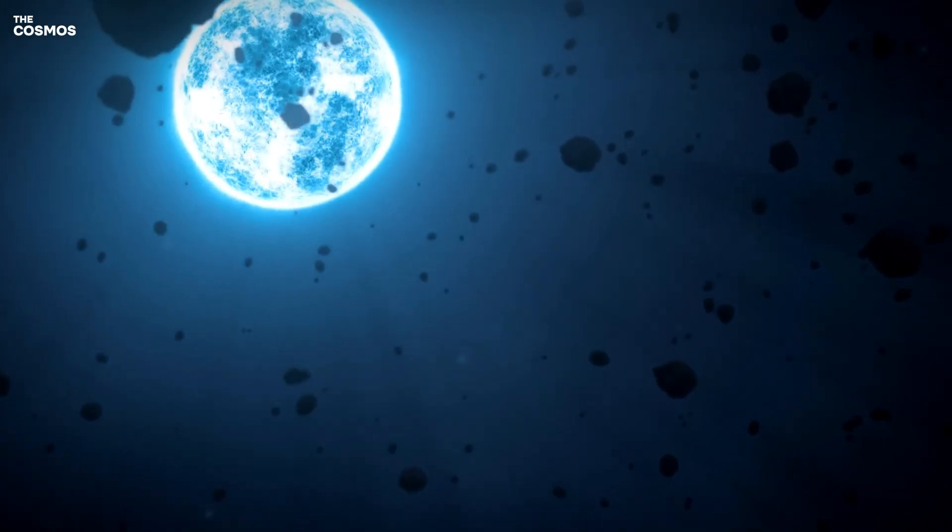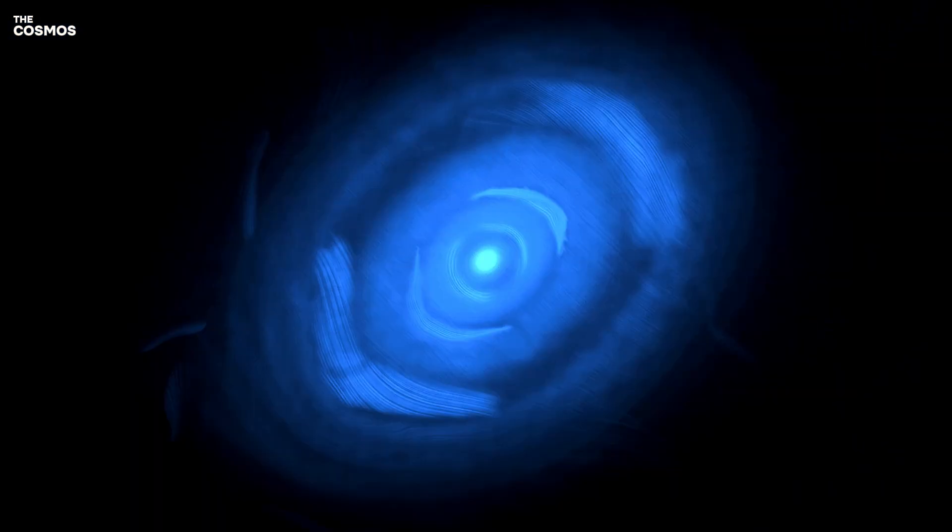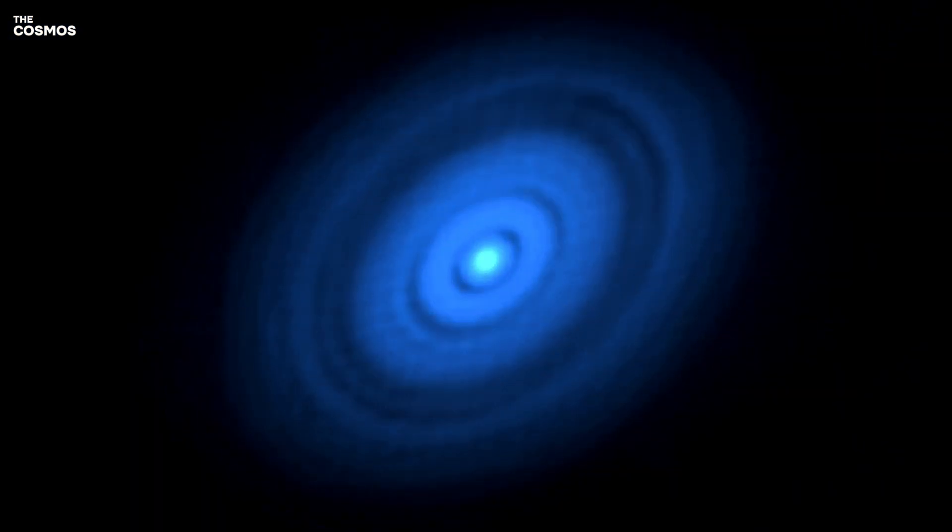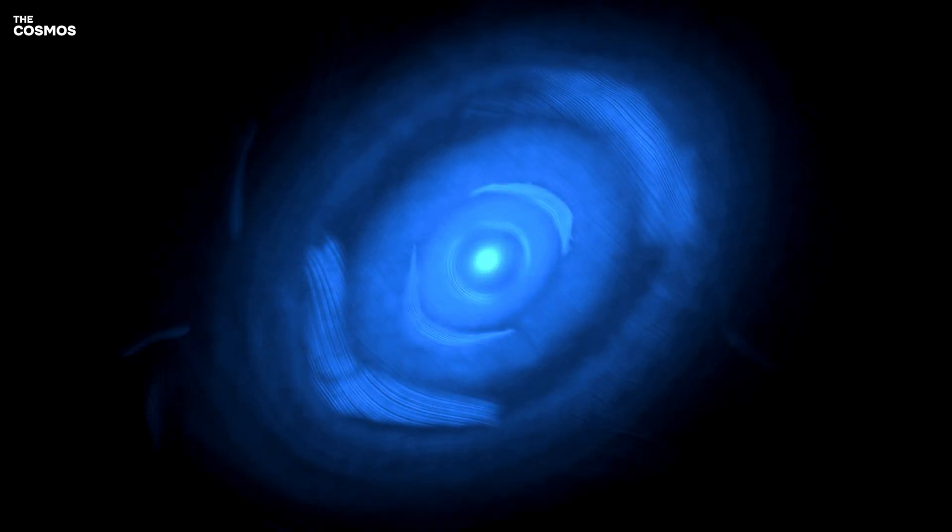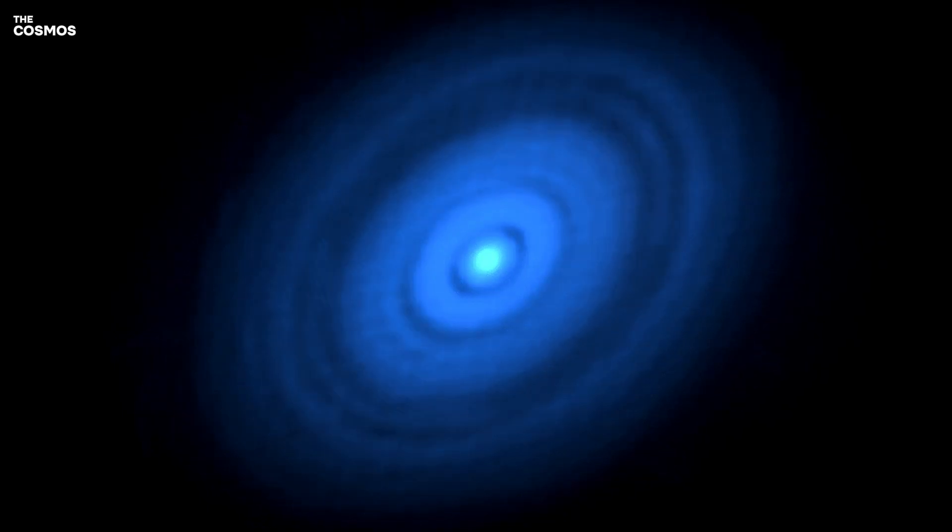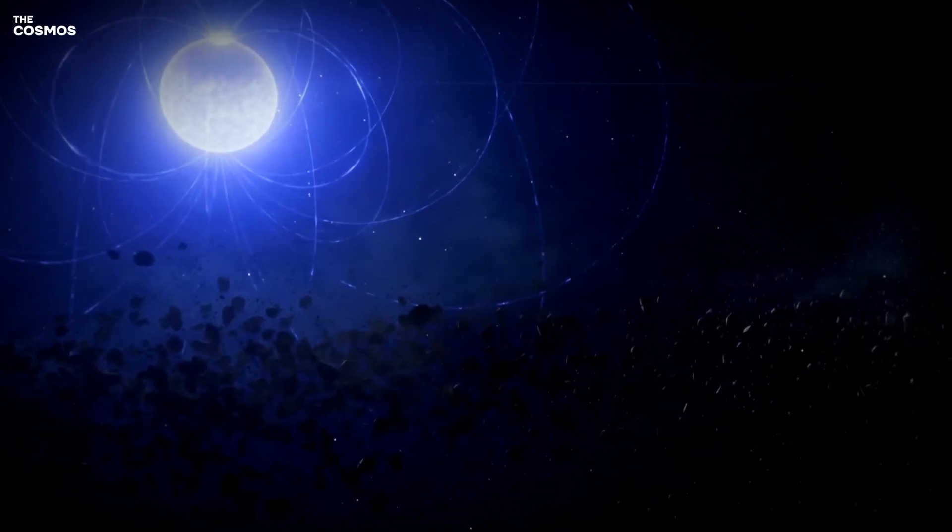This variation in metal strength, coupled with synchronous fluctuations in the star's magnetic field, suggests that the metals are not uniformly distributed but are instead concentrated in a specific region, likely one of the star's magnetic poles.